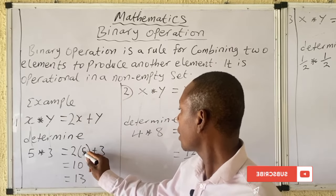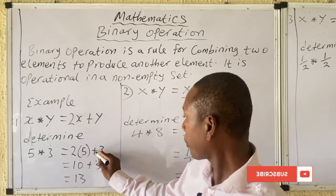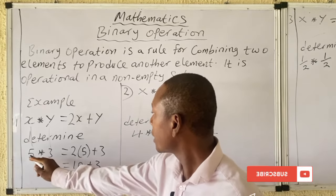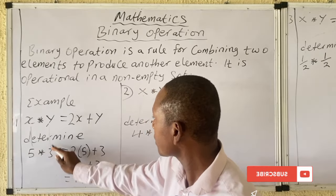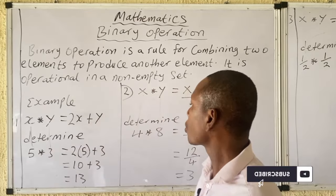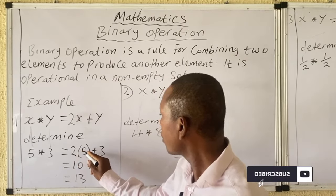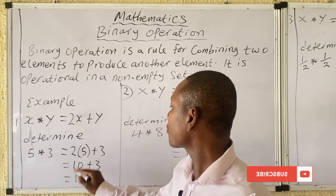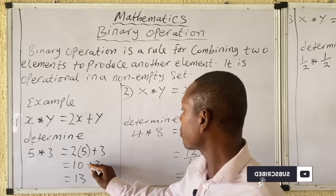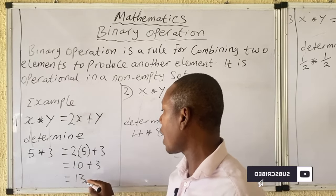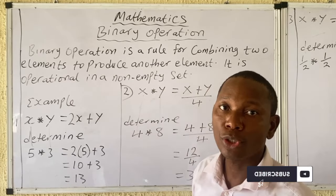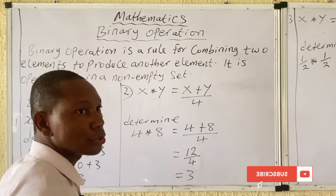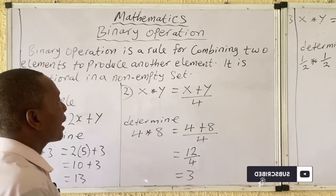So x is 5 and y is 3: 2×5 + 3. That gives 10 + 3, and the answer is 13.